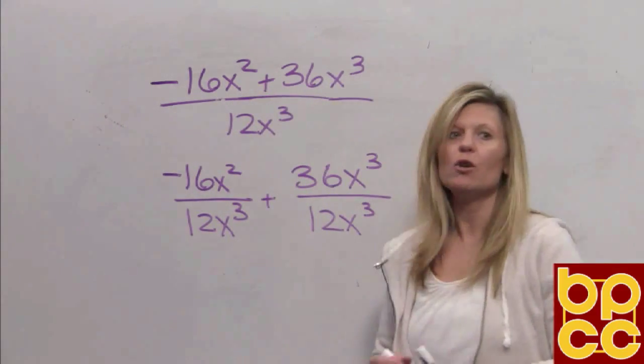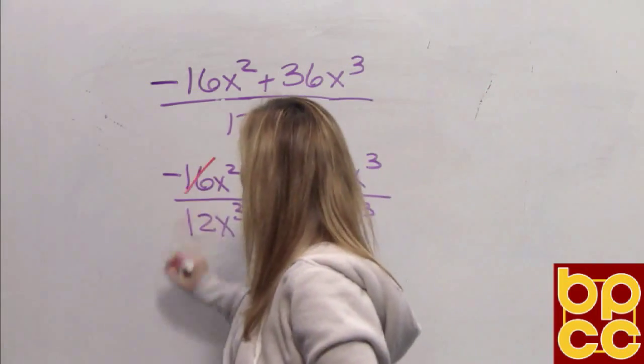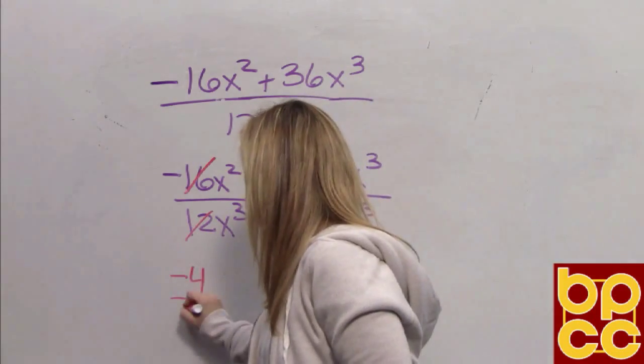So how do you reduce it? You find a common number you can divide both 16 and 12 by, which is 4. So 16 divided by 4 would leave us a negative 4. 12 divided by 4 would give us a 3.